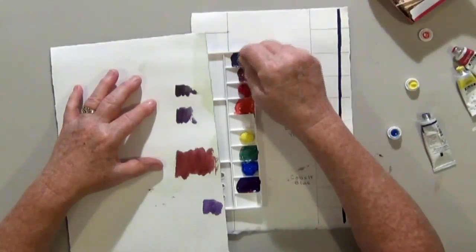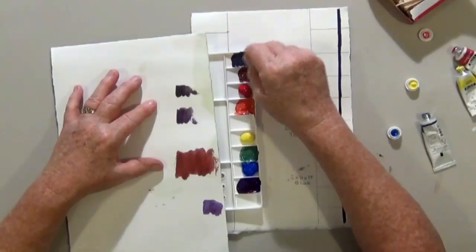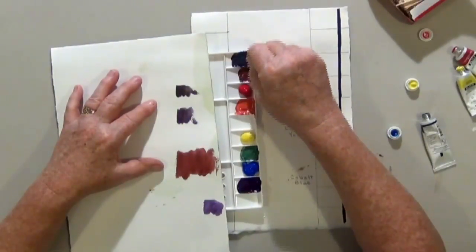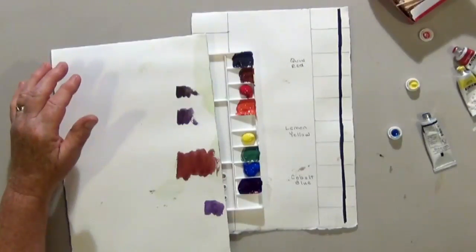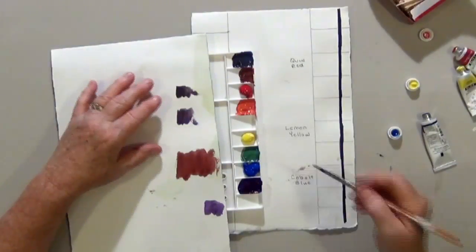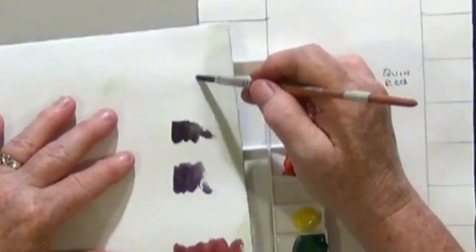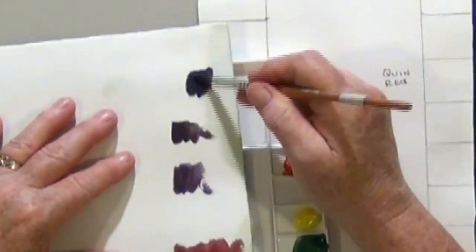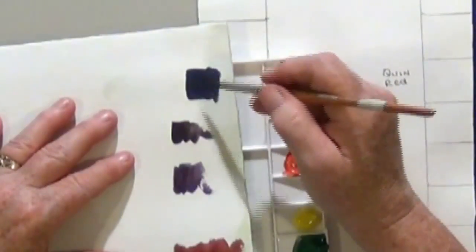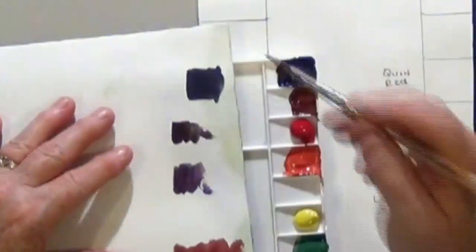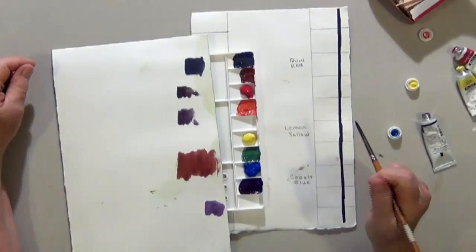So I'm trying to balance all three colors to get the darkest, most neutral value I can. Let's see. And I think that's probably going to be it. So it's obviously not a black, but it's a medium dark gray.